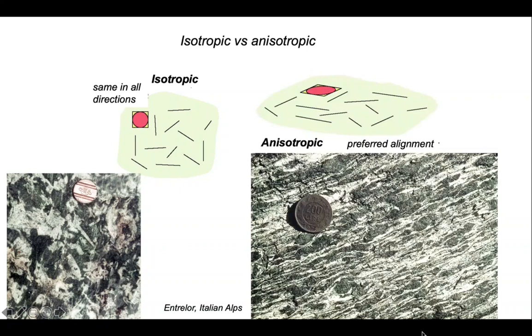as opposed to anisotropic rocks where there's preferred alignment of the long axes of grains. In the two photographs here, these are both the same material, both are metamorphosed gabbros. The one on the left is inferred to be undeformed and the one on the right is inferred to be strongly deformed, creating this preferred anisotropic alignment of grains.